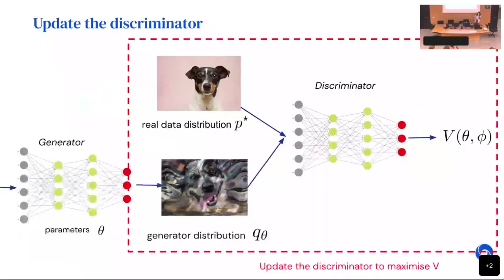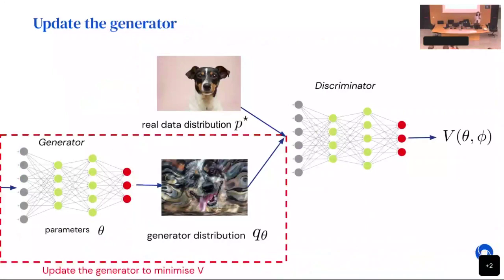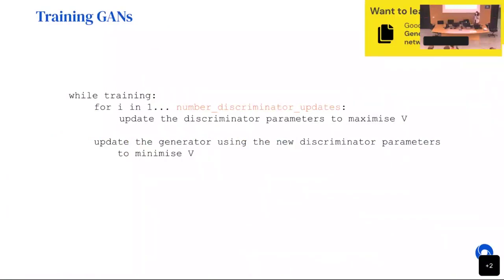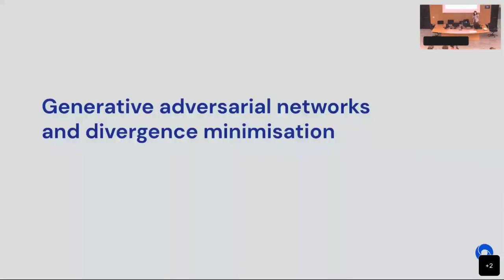To summarize: the discriminator maximizes the binary cross-entropy, and the generator minimizes the same loss. To train such a model, we apply alternating gradient descent. In theory, we want to train the discriminator to optimality each time before updating the generator. In practice, we update the discriminator a few times, then update the generator. You have two networks, implement the binary cross-entropy loss for one and minus that for the other, then train them together using alternating gradient descent.